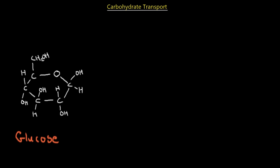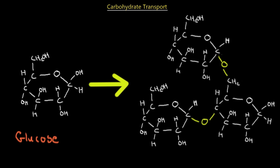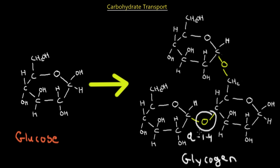How glucose is going to be transported and stored within our body. This is a molecule of glucose — it has six carbons. The chemical formula is C6H12O6, and it is going to be transported and stored in the form of glycogen. Glycogen is a huge polymer of glucose with molecules interconnected by two common bonds: the alpha 1-4 glycosidic bond and the alpha 1-6 glycosidic bond.